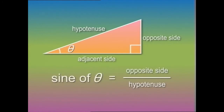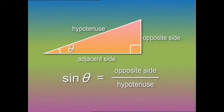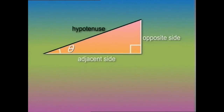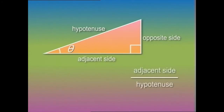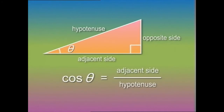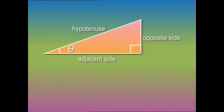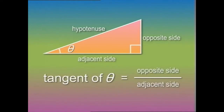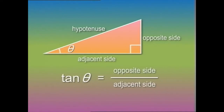This trigonometric ratio is called the sine of theta, written in short as sine theta. Comparing the adjacent side with the hypotenuse gives us another trigonometric ratio called the cosine of theta, written in short as cosine theta. Comparing the opposite side with the adjacent side gives us the third trigonometric ratio called the tangent of theta, written in short as tangent theta.